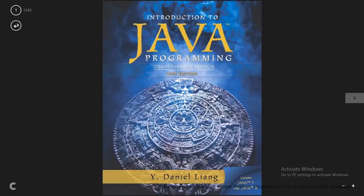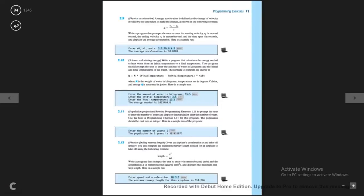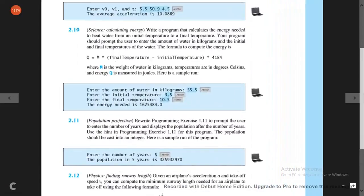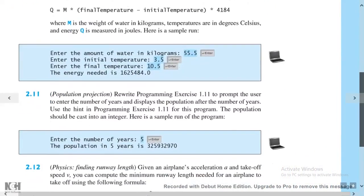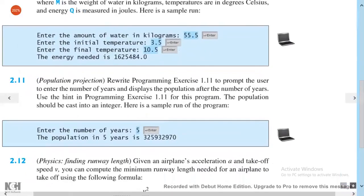Right now, the exercise we are working on is exercise 2.11, which is located on page 94. We're going to rewrite programming exercise 1.11 to prompt the user to enter the number of years and display the population after that number of years.